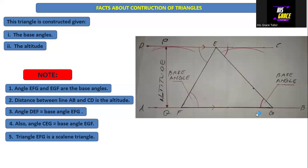So we have the longest length is FG, then followed by EG, followed by EF. So this makes this triangle to be a scalene triangle, and also the angles are not equal.